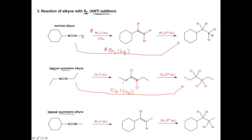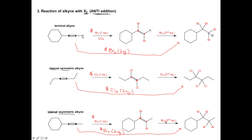Our last halogenation example is very similar. With one equivalent of Br2, two bromines are added across the alkyne — I break one pi bond, leaving one pi bond and an alkene. The second equivalent adds two more bromines. This would typically be written as Br2 with two equivalents. Keep in mind the reactions shown as the final combined step are what we would generally see in problems — it would simply say Br2 with two equivalents from our starting alkyne.